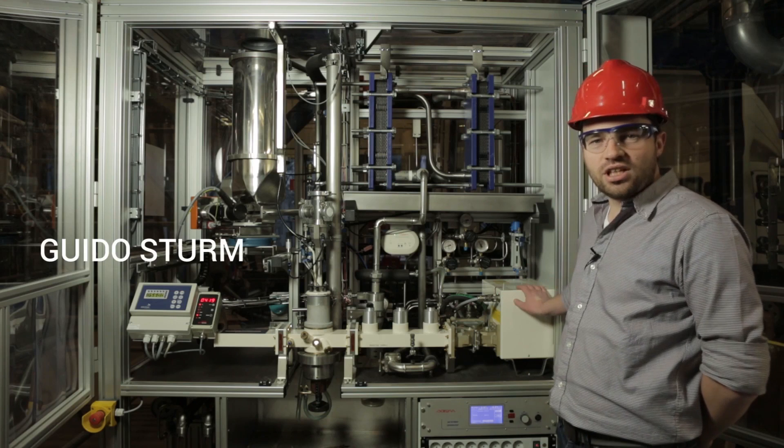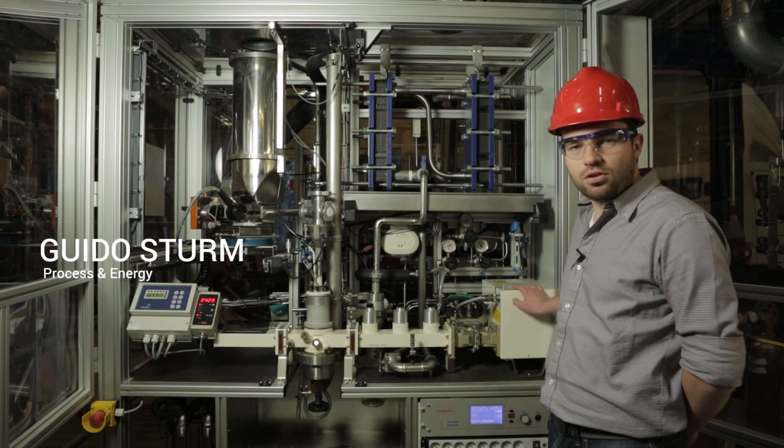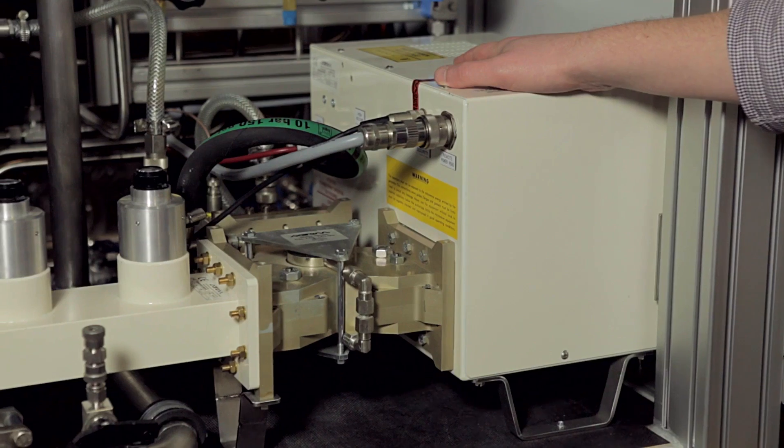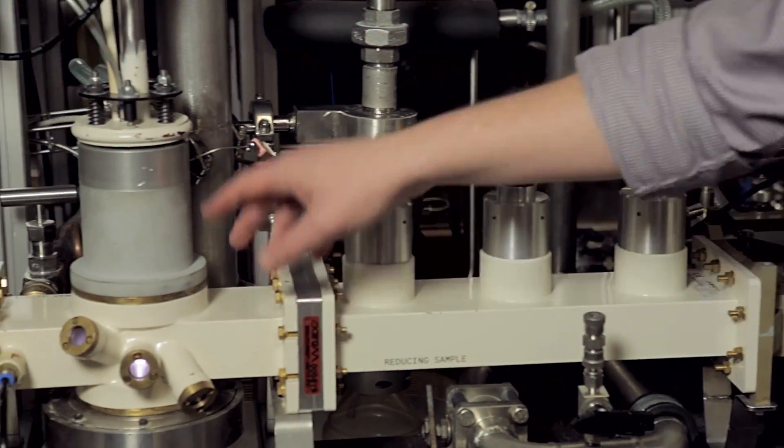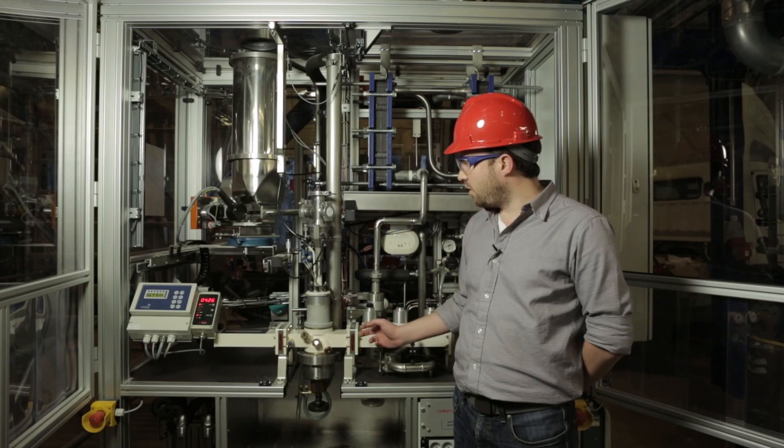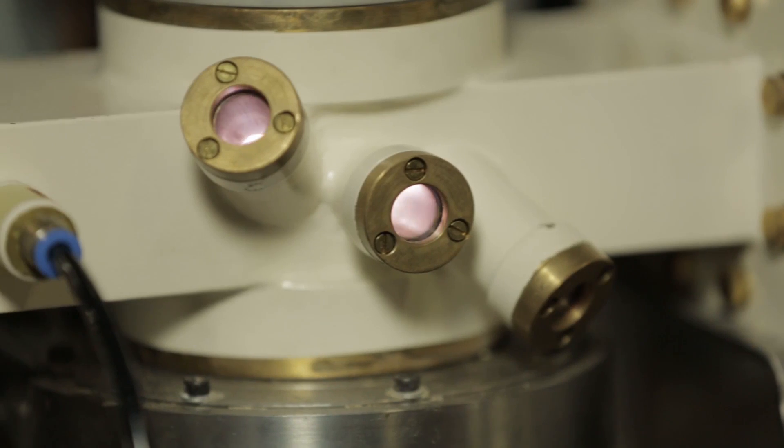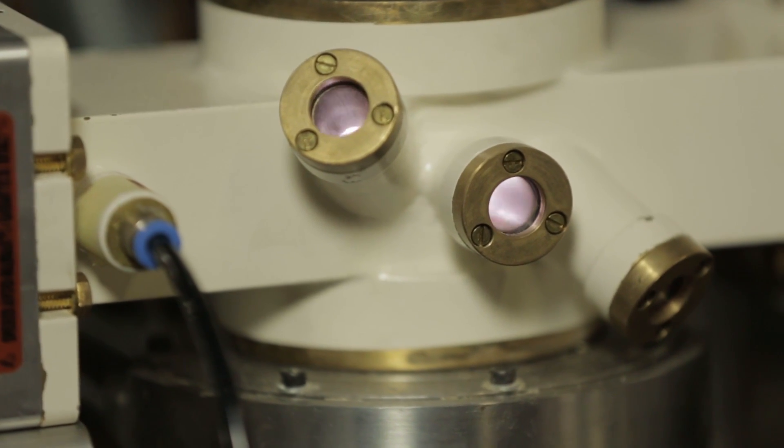This is our microwave generator. It generates the power of about six typical domestic microwave ovens. The microwave field is transmitted to a plasma generator where a plasma is generated. In this plasma we feed biomass that is converted into syngas which is then transported to the gas cleaning unit.